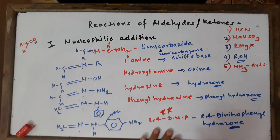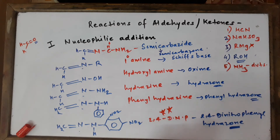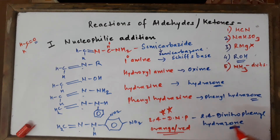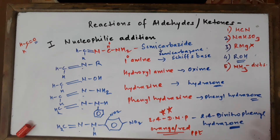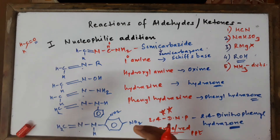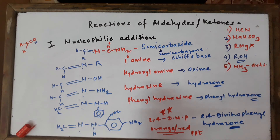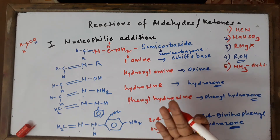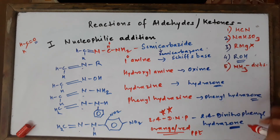2,4-DNP is an important reagent used to identify the presence of an aldehyde or ketone, because this reagent can react with any aldehyde or ketone to form an orange or red colored crystalline product. The precipitate you get is called 2,4-DNP precipitate. If you start with a colorless aldehyde and add a few drops of 2,4-DNP and shake it, the color turns orange or red. The moment it changes to an orange or reddish precipitate, it confirms 100% that it's an aldehyde or ketone.